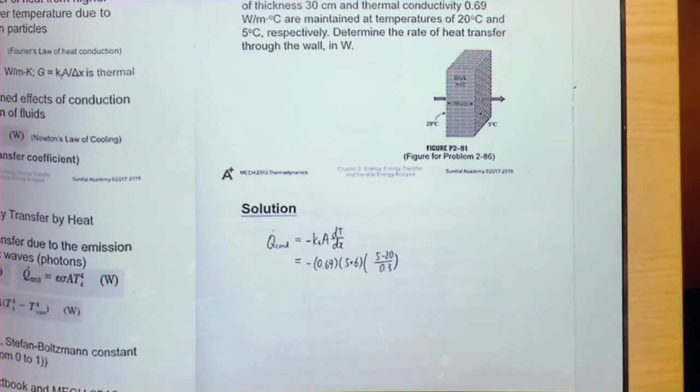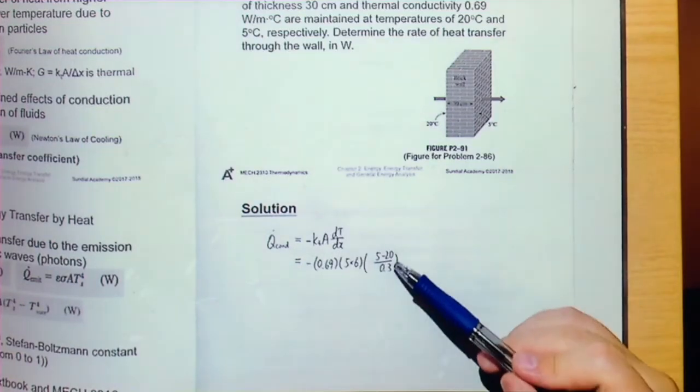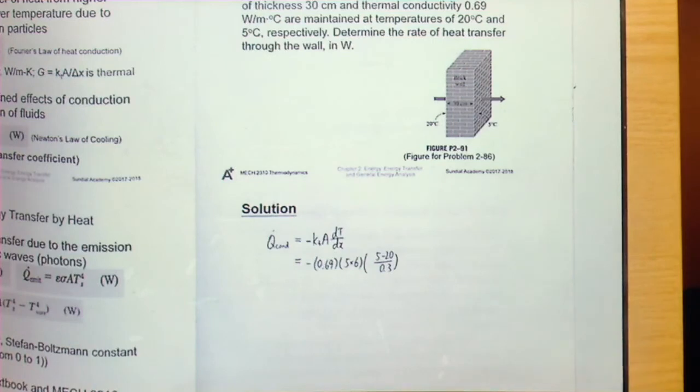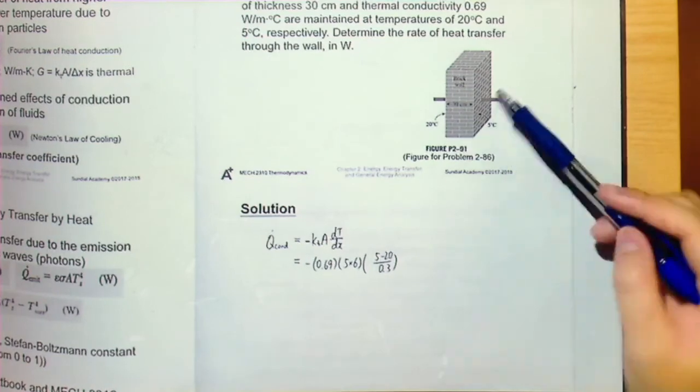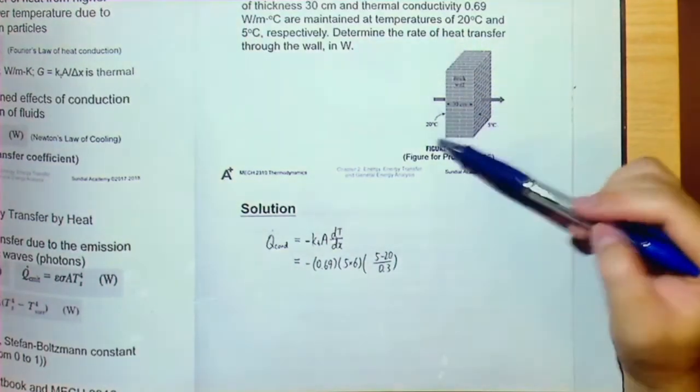And it should be 5 minus 20 because it should be final minus initial. It depends on the heat transfer direction. So this surface is the final surface. This one is the initial surface.